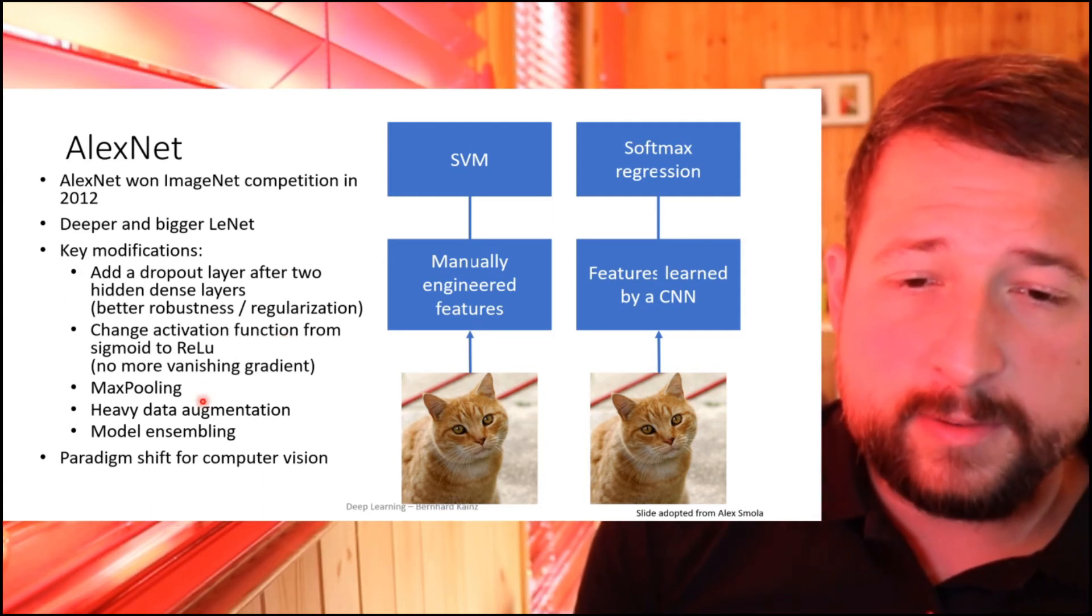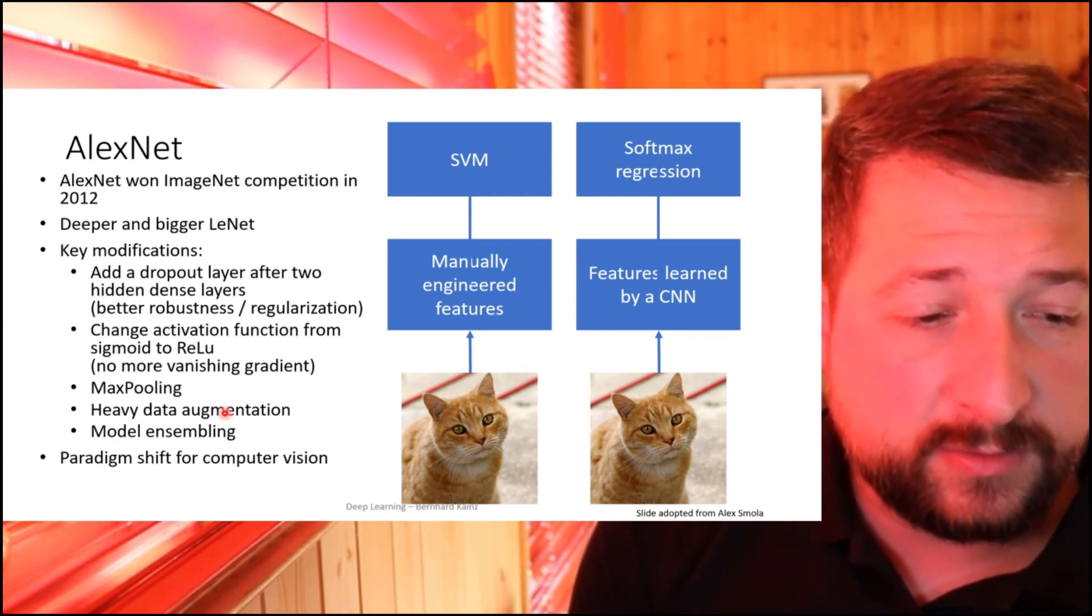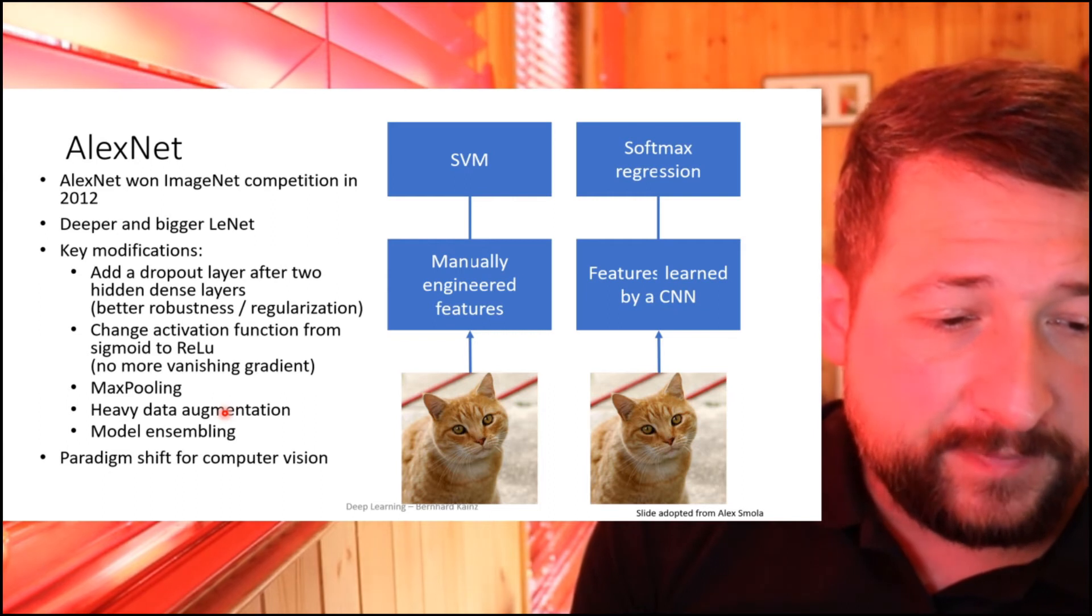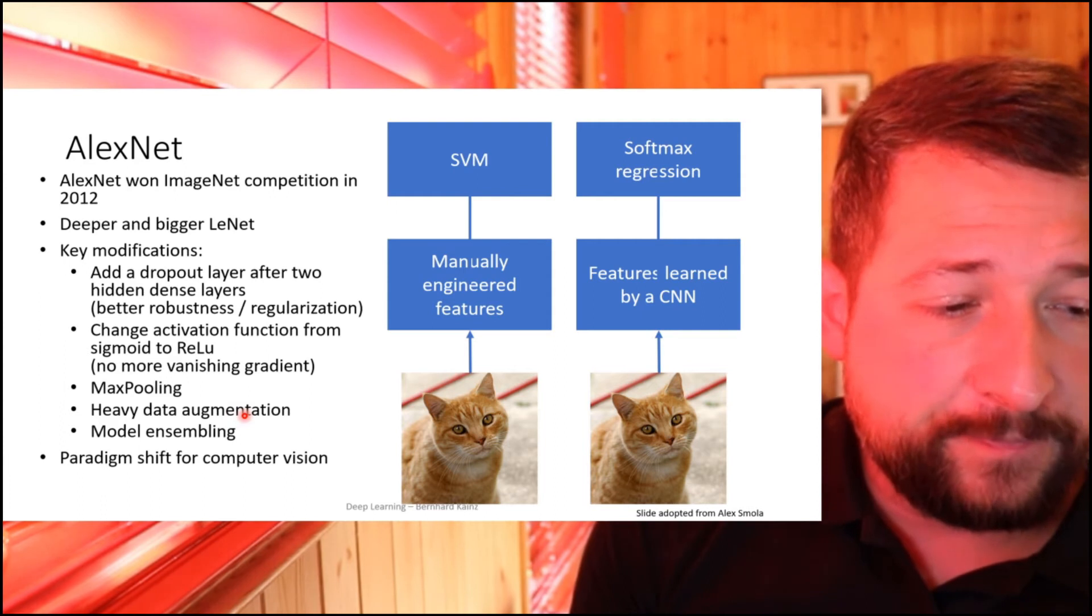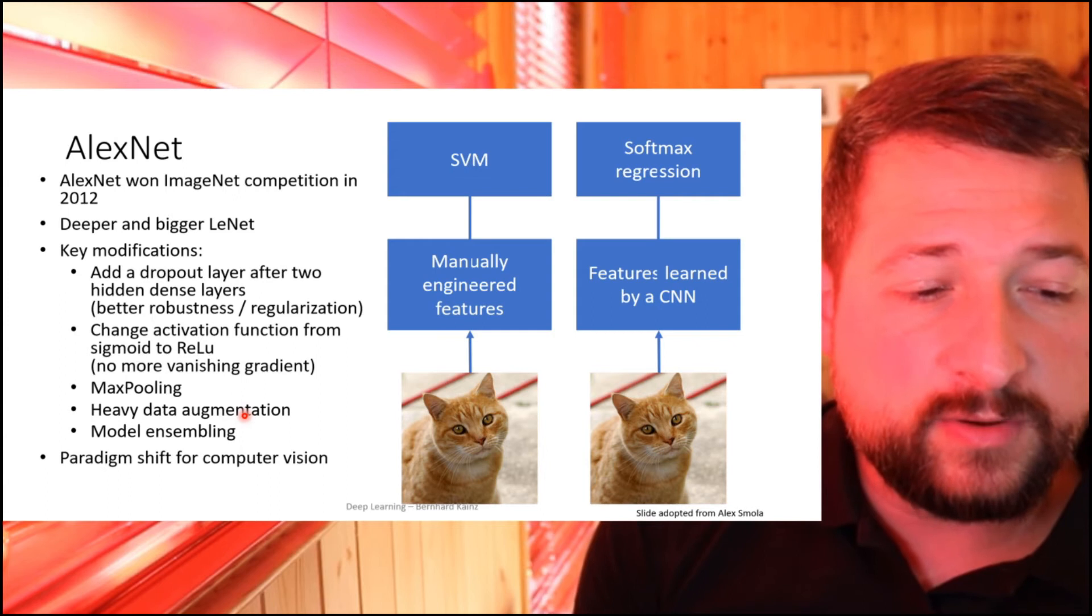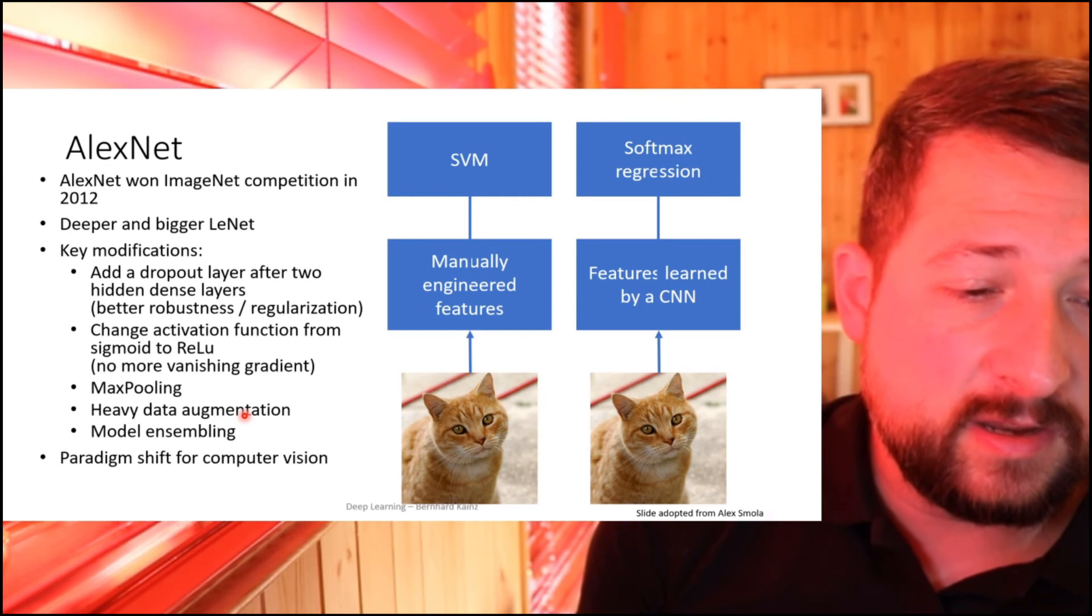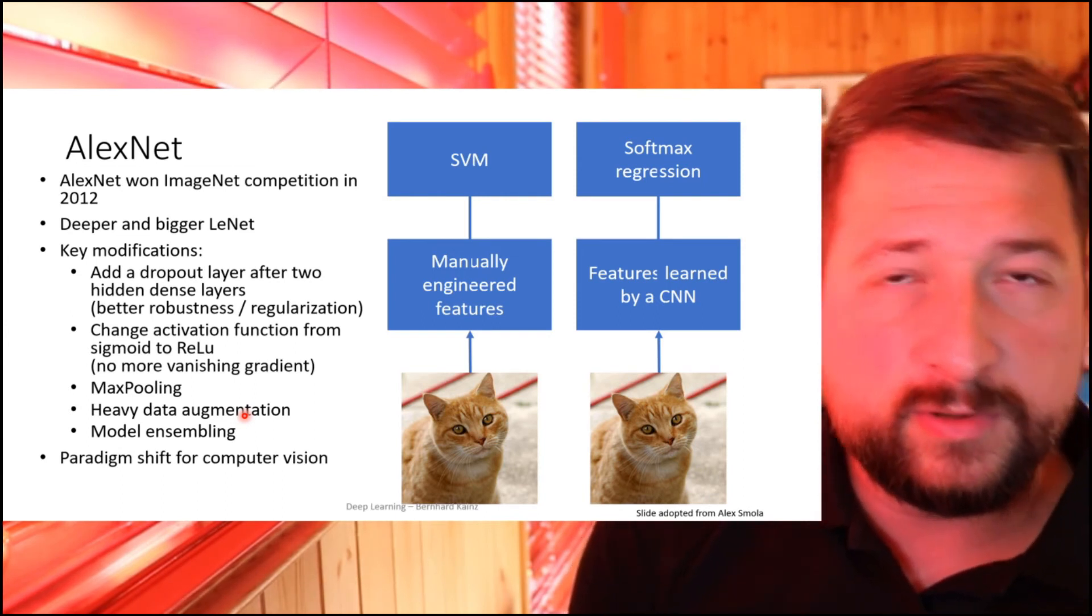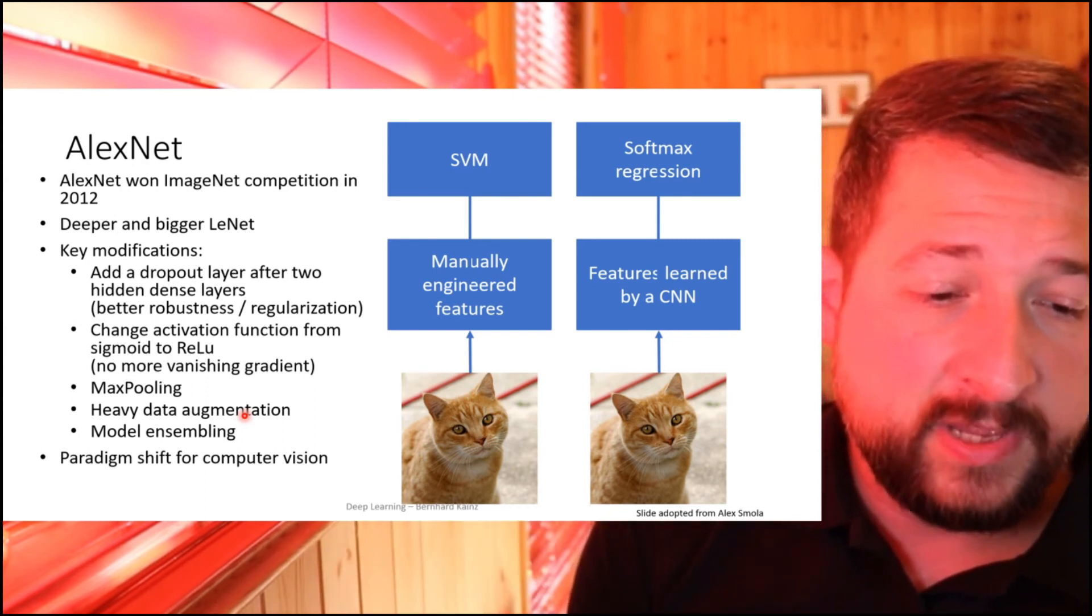Another thing was max pooling. To this point, average pooling was the common thing to use in networks, but max pooling really replaced average pooling at this stage because the result was that we become a little bit more shift invariant with max pooling. You could now move your attributes a little bit, and max pooling would still pull the relevant attributes through, while average pooling would depend on the entire window where you build your average from.